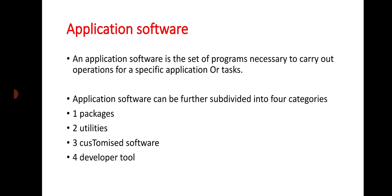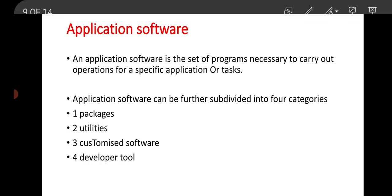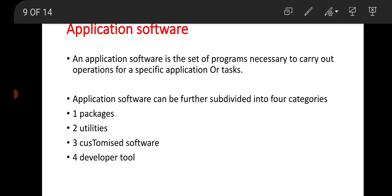Our next category is application software. Application software is the set of programs necessary to carry out operations for a specific application or task. System software is not sufficient to perform all types of tasks, which is why we need application software. Application software can be further subdivided into four categories.